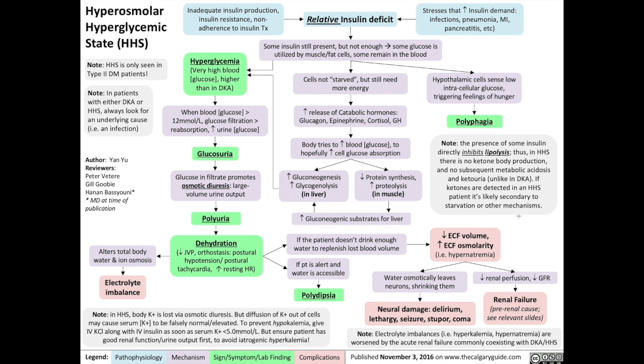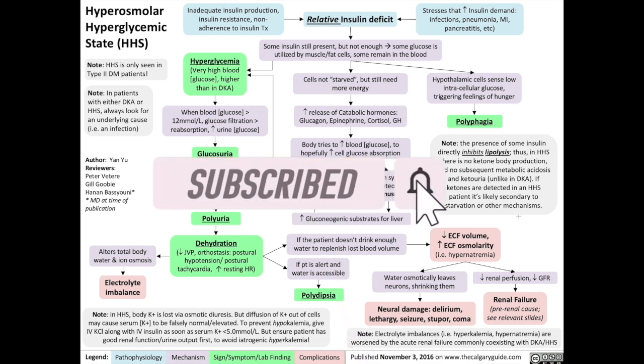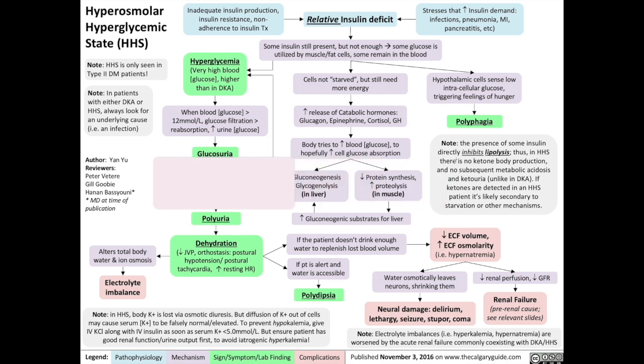And that's all for hyperosmolar hyperglycemic state. For more topics on the complications of diabetes, you can check out my video on the pathogenesis and signs and symptoms of DKA, or the pathogenesis of type 1 and type 2 diabetes. If you enjoyed this video and learned something about why patients with HHS are so dehydrated and why it's so dangerous, please like this video and subscribe to my channel. Thanks for watching and see you in the next video.